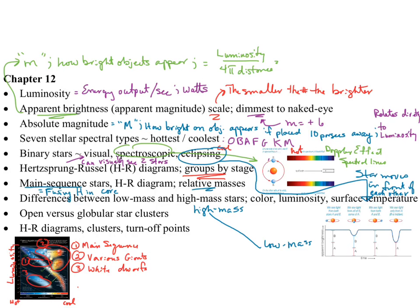On the main sequence, the upper-left stars are the more massive stars, and the lower-left are the low mass stars. Low mass stars tend to be red, low luminosity, and cool in the main sequence. High mass stars are blue, high luminosity, and hot.